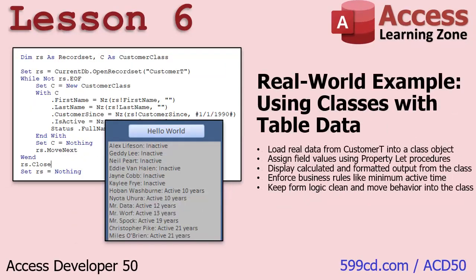In Lesson 6, we're going to wrap it all up with a real-world example. We're going to use a record set, loop through all the customers in our table, set each customer into a class using the class logic, and then display it with the class functions — getting the full name and customer status straight out of the class functions. It's going to be pretty cool. So check it out — that's all in Lesson 6.